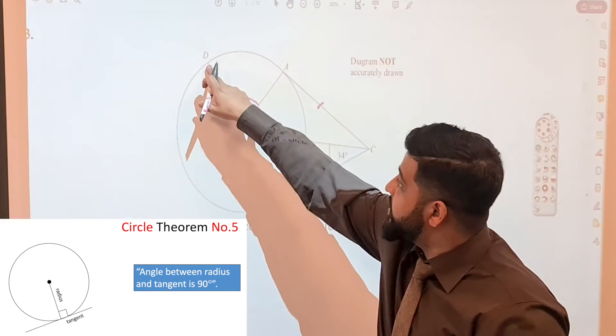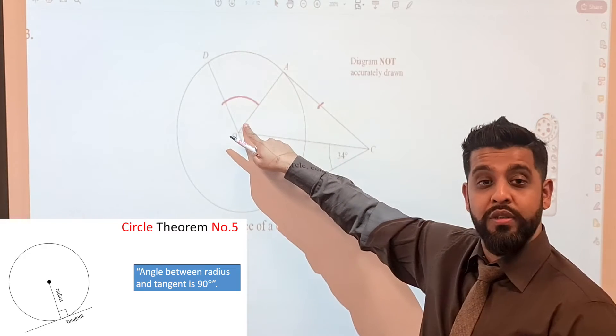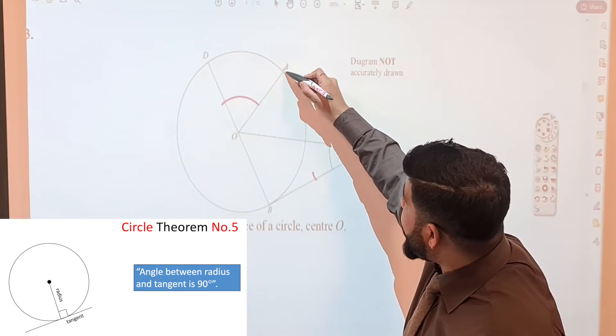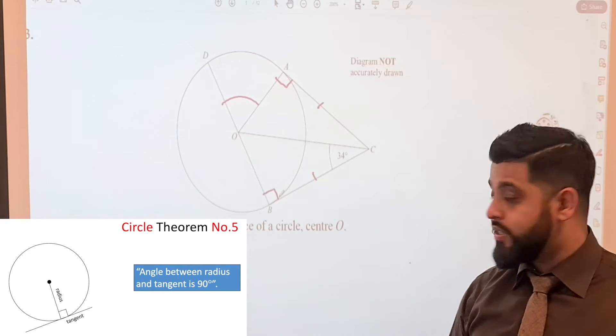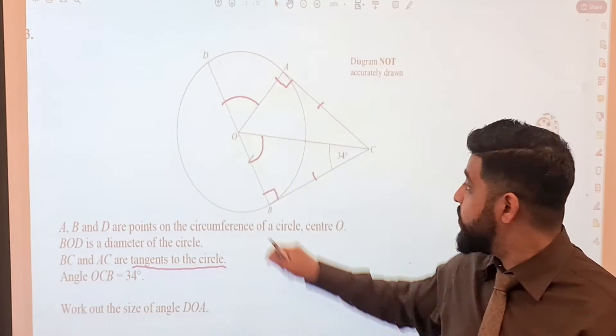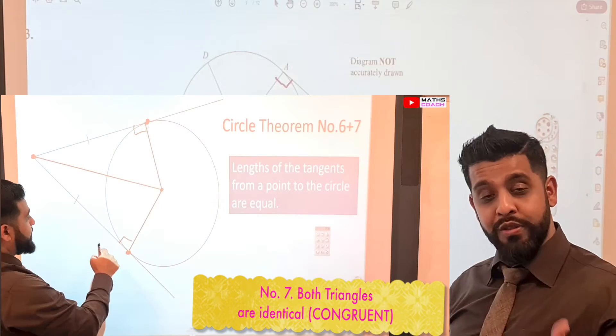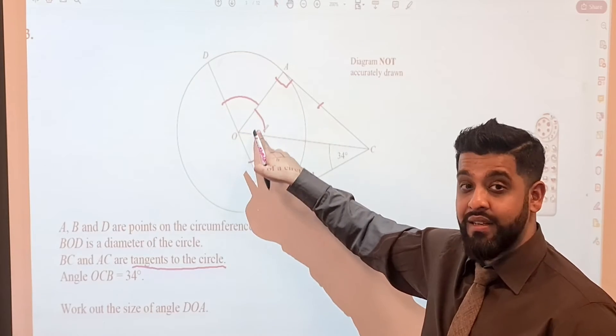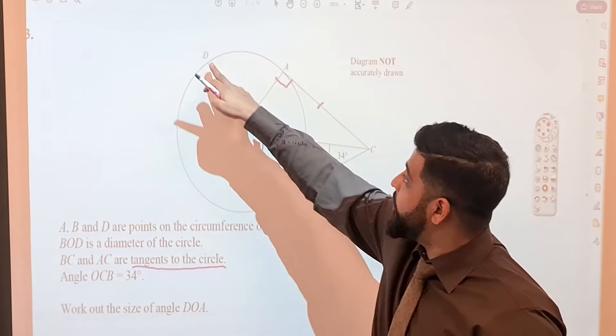Secondly, this is a radius because this is a diameter. So this is a radius to a circle, this is a radius to a circle. Also, this is a radius to the circle as well. Which means that the angle that the radius and the tangent make is 90 degrees from one of our other theorems. And therefore the angle here is also 90 degrees. We can find this third angle of this triangle here, which is exactly the same as this triangle because they are congruent. And once we know this angle, we can use angles on a straight line and find angle DOA.